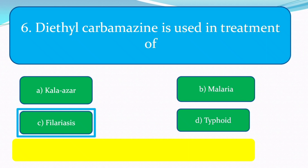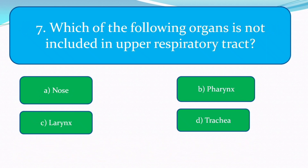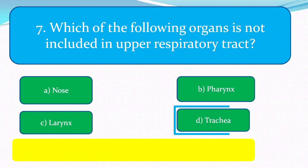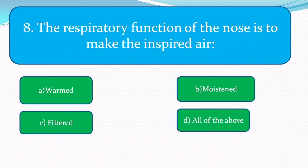The next question: which of the following organs is not included in the upper respiratory tract? The options are nose, pharynx, larynx, and trachea. The correct answer is trachea.